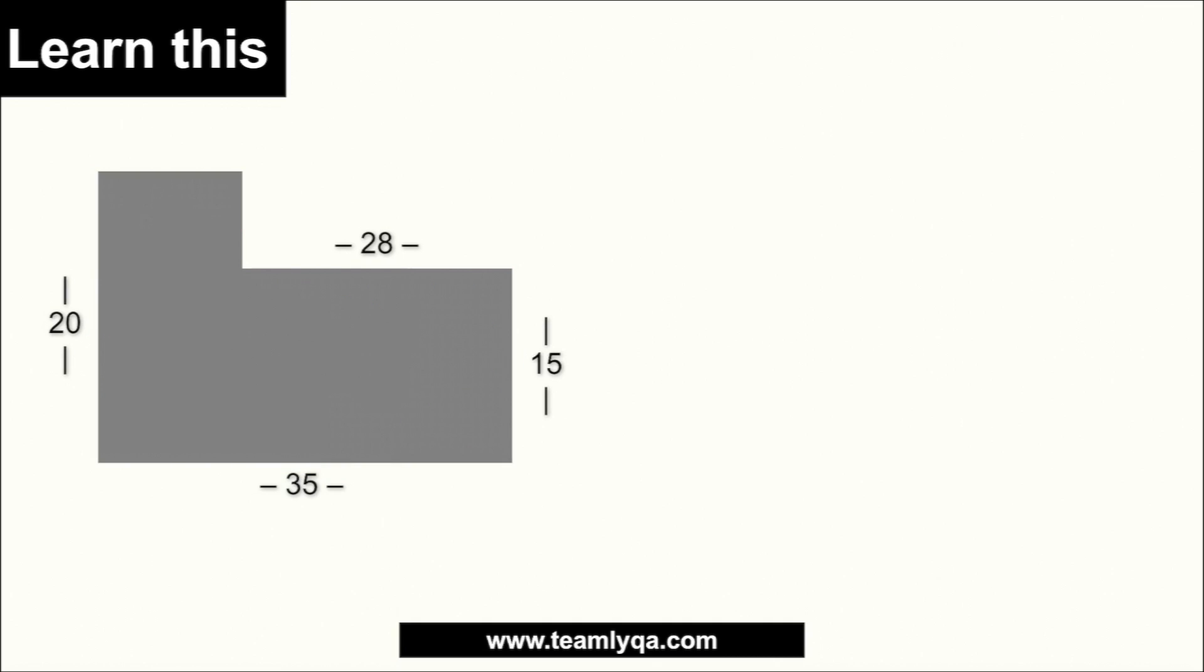Now, mapapansin nyo dito sa shape na ito, may mga parts na kulang. Bakit? Kasi, katulad ito, ito alam natin 15, 35, 28. Pero ito, hindi natin alam kung ano yan. Hindi rin natin alam kung ano ito. Eh, kung gusto natin makuha yung perimeter, sabi natin dapat lahat ng sides. Now, how do you get that?